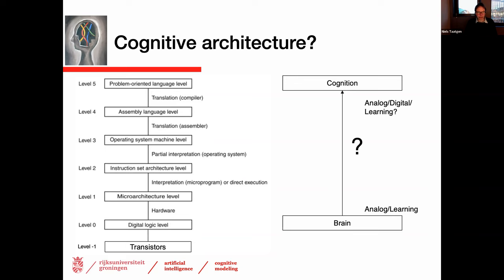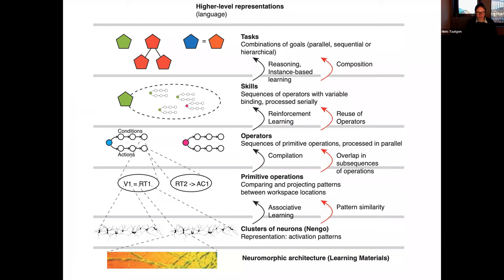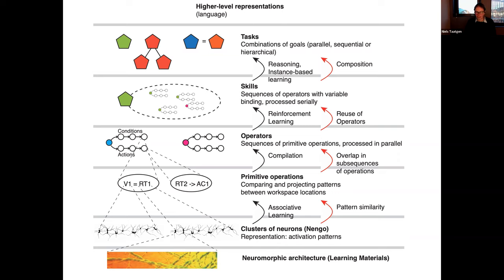This has been the focus of my research over the last couple of years. Instead of thinking about three levels — the brain, behavior, and some intermediate level — what other levels of abstraction can we think about, and how do they translate into one another? Here's my diagram. It's a big diagram and it violates the rules of presentation, but I just want to show a general outline of different levels of abstraction.